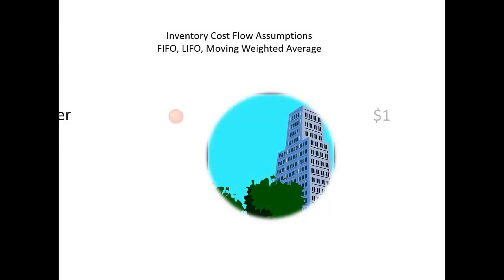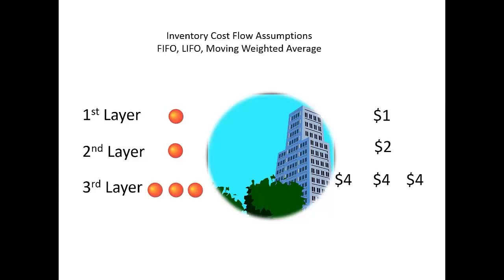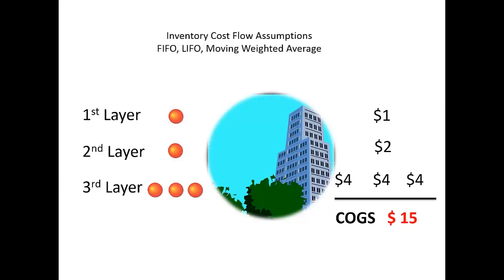For example, let's assume a company were to purchase one gumball for $1, one for $2, then three more at $4 each – a total purchase cost of $12 for these last three. The cost of goods available for sale during the period would be $15, made up of three different inventory cost layers: a $1 layer with one unit, a $2 layer with one unit, and a $4 layer with three units.